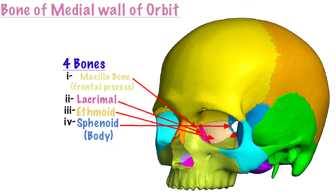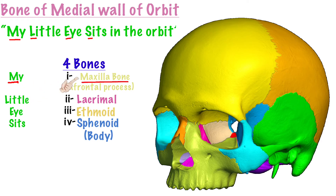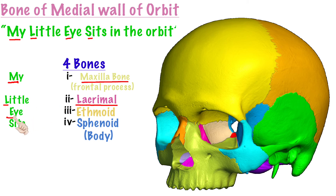The mnemonic that will help you to memorize it is: My Little Eye Sits In The Orbit. The M in 'My' represents the maxilla bone — specifically the frontal process of the maxilla bone. The L in 'Little' represents the lacrimal bone. The E in 'Eye' represents the ethmoid bone. The S in 'Sits' represents the sphenoid bone.